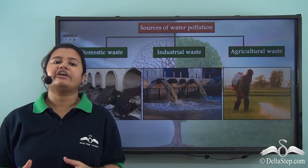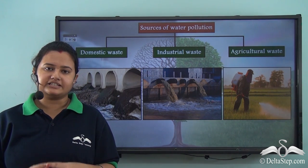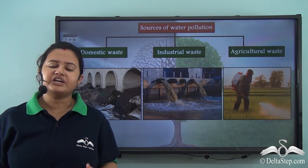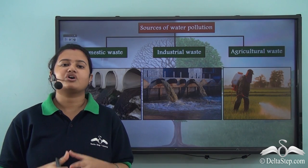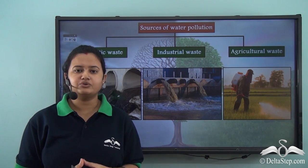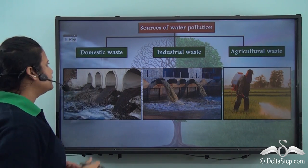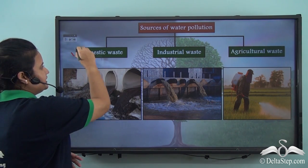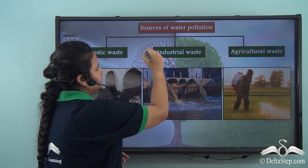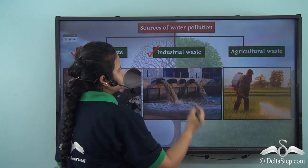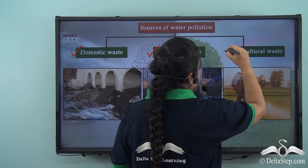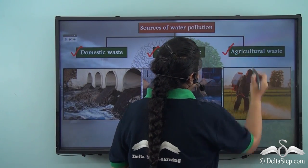Previously, we have discussed that the major sources of water pollution are domestic waste, industrial waste, and agricultural waste.